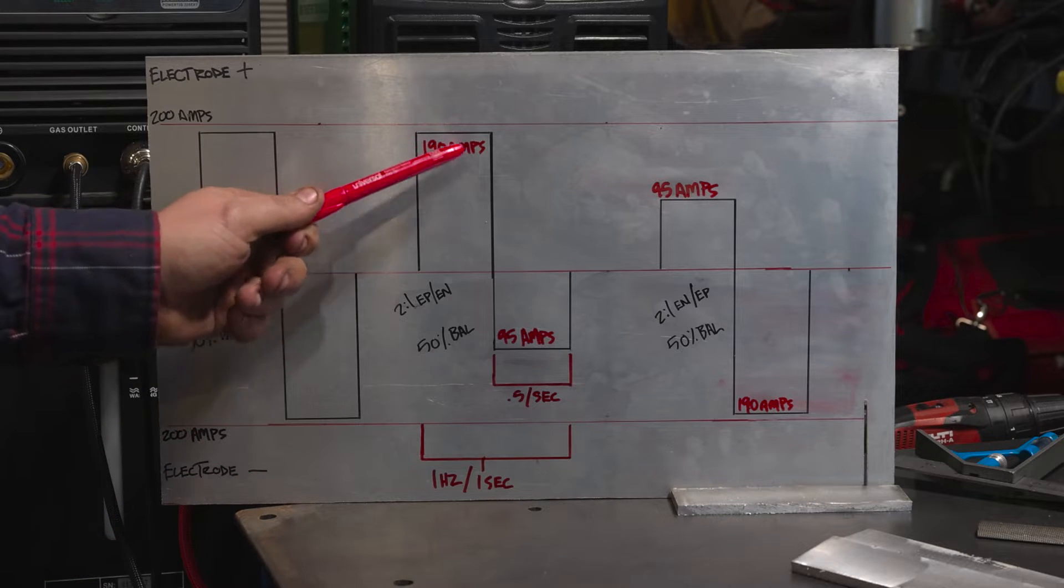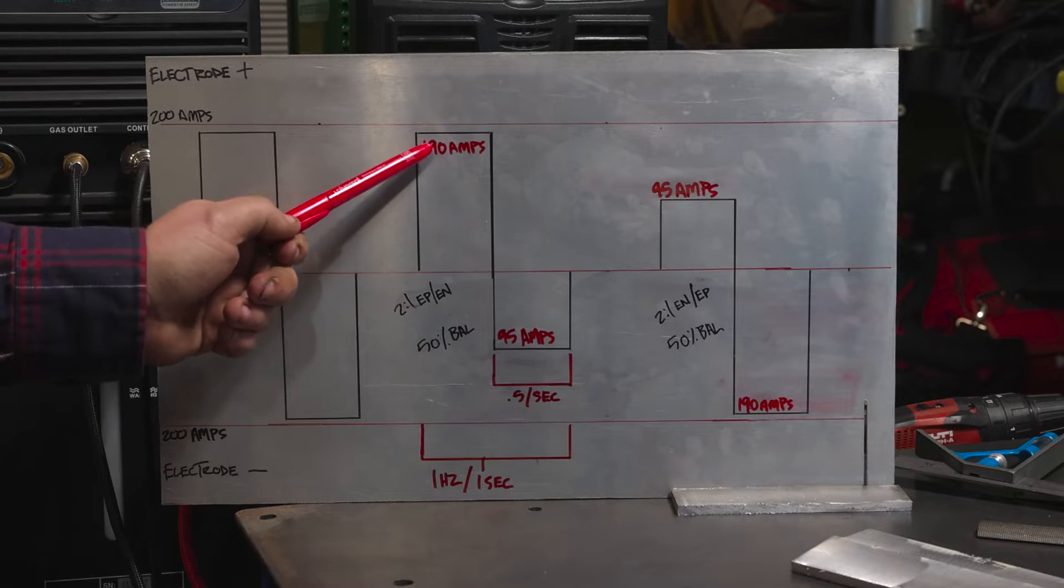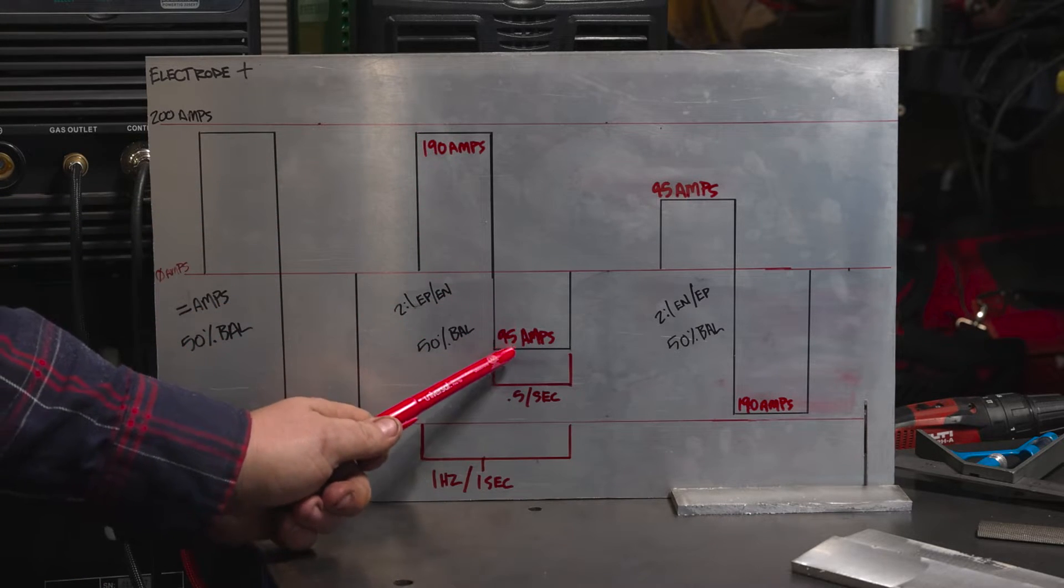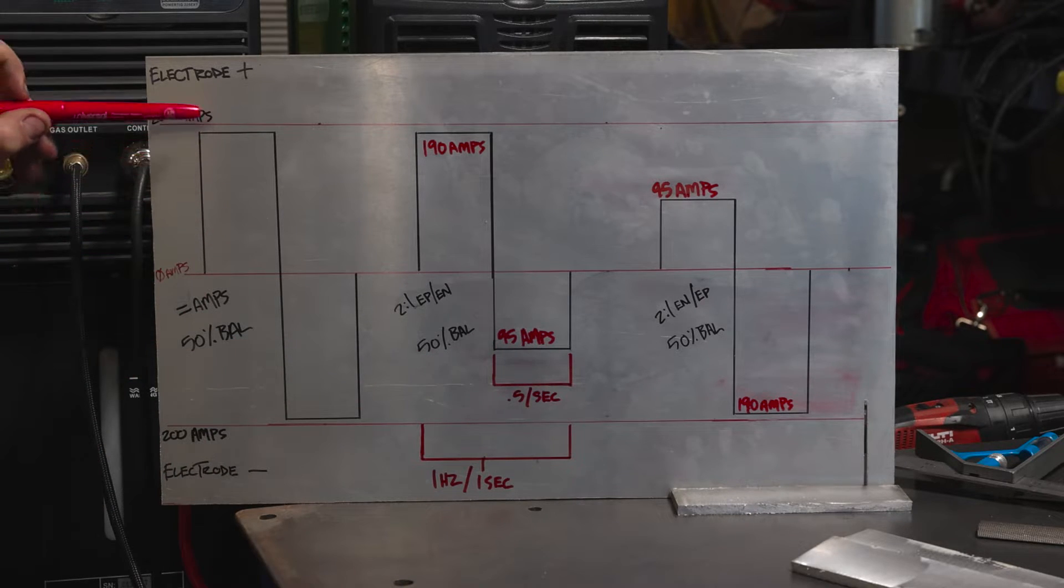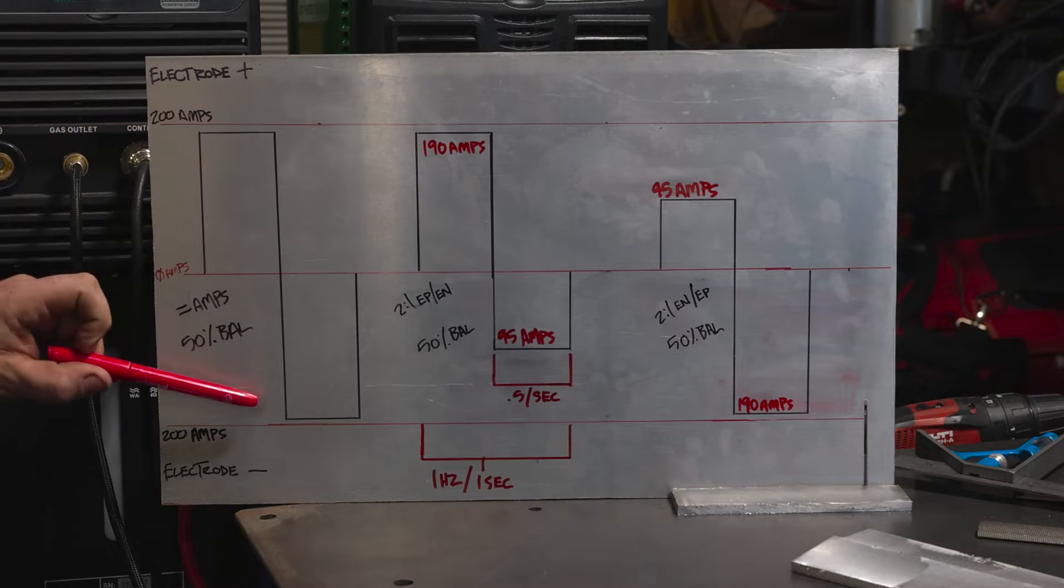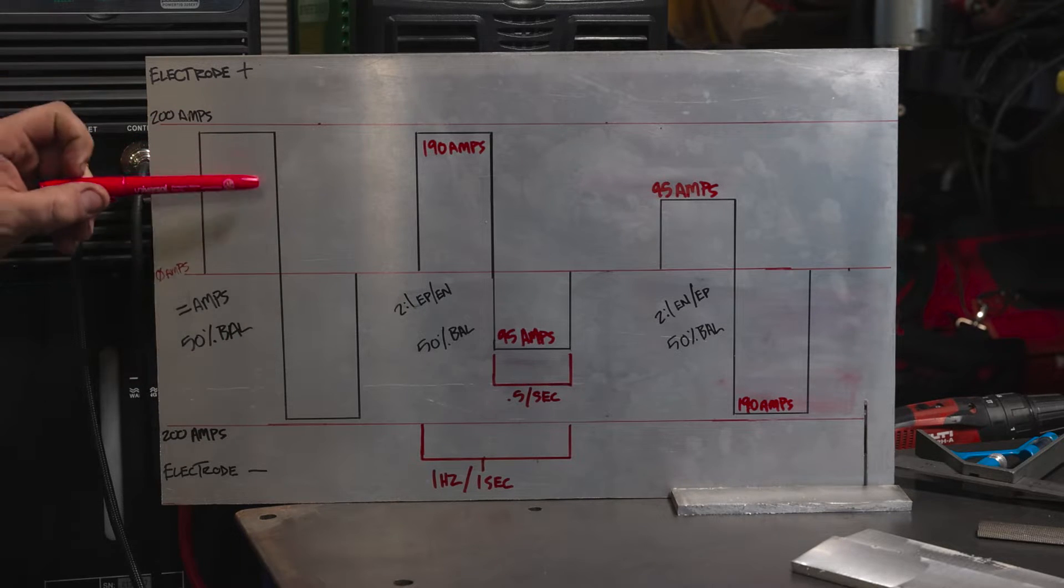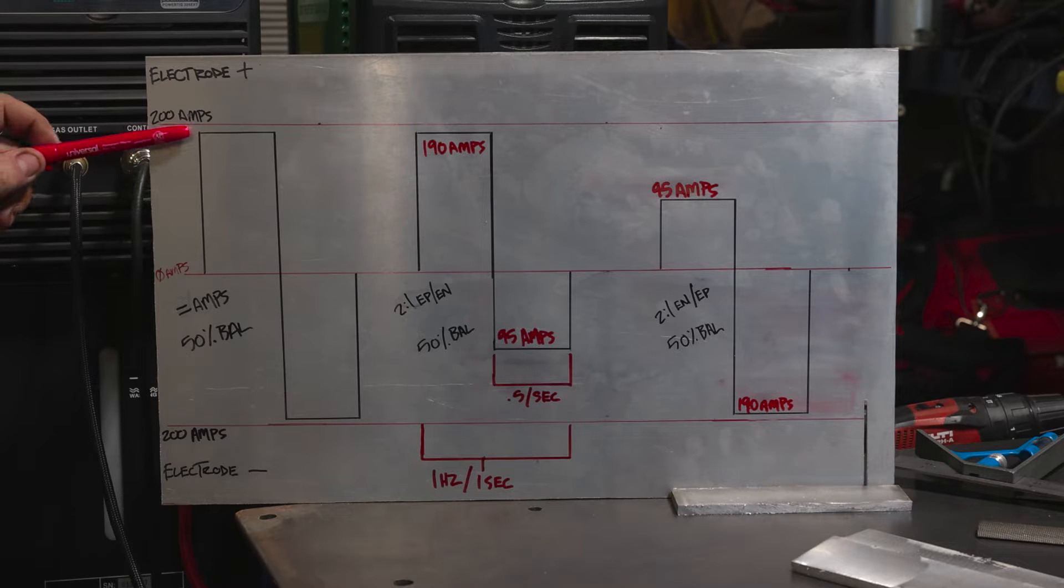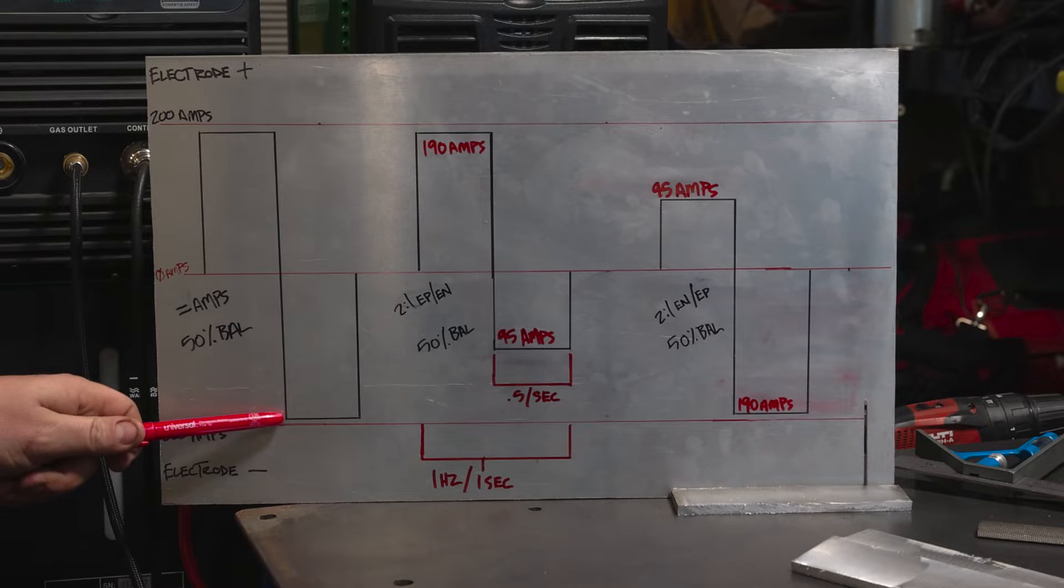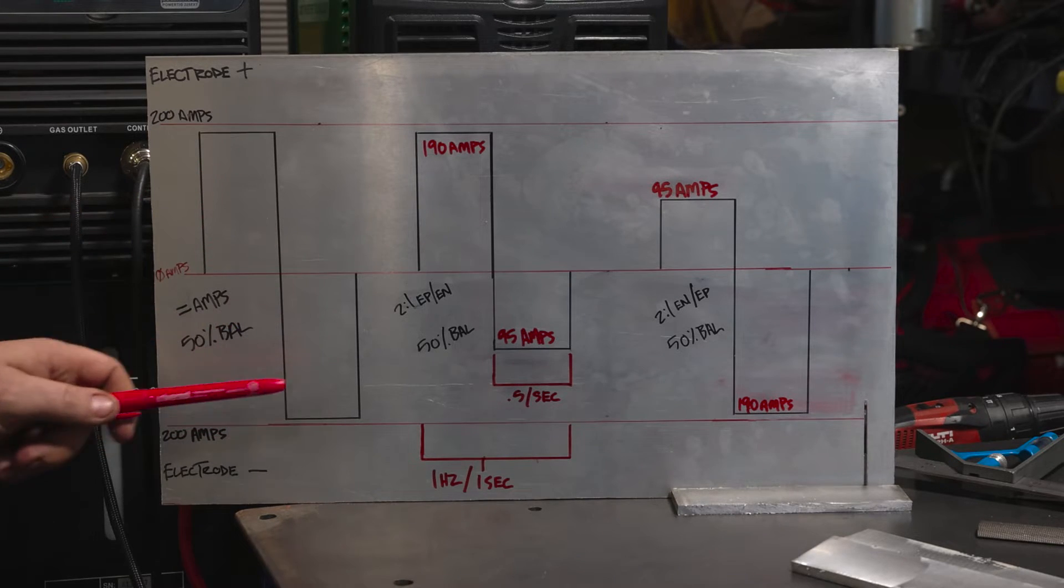We're going to talk about independent amplitude, which is the ratio between our electrode positive and our electrode negative amps. So to start out, here is a balanced EPEN, 50% balance at equal amplitude. This is 200 amps and this is 200 amps. We see right up here 190 amps electrode positive and 190 amps electrode negative, so we're perfectly balanced here.